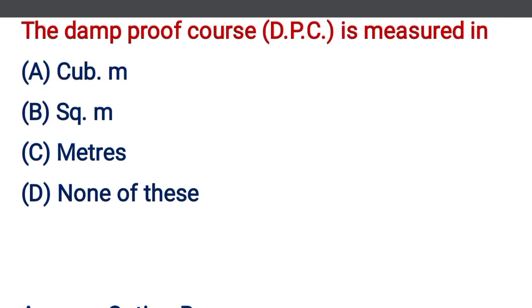The damp proof course (DPC) is measured in — option A: cubic meter, option B: square meter, option C: meter, option D: 0.25 m³. The correct answer is option B, square meter.